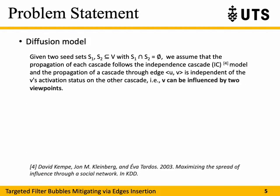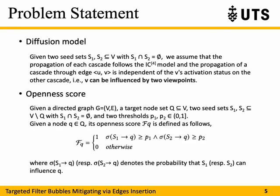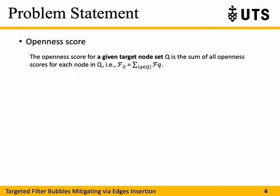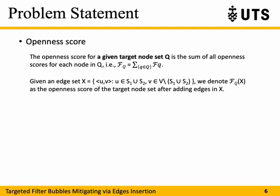In this paper, we adopt the independent cascade model, which is widely used in the literature. Generally, we suppose each node can be influenced by two viewpoints simultaneously. Furthermore, we propose the openness score for each target node: if one node can be influenced by two viewpoints simultaneously with a probability larger than a given threshold, its openness score is one; otherwise it is zero. Based on this, the openness score for a given target node set Q is the sum of all openness scores for each node inside. We denote F(Q, X) as the openness score of the target node set after adding edge set X.